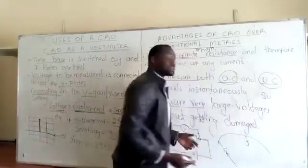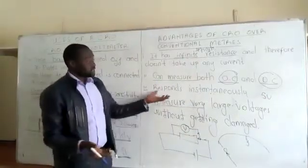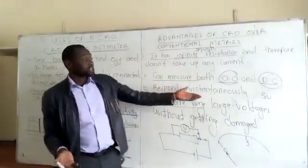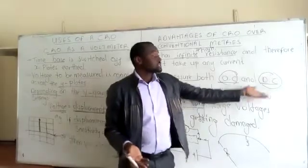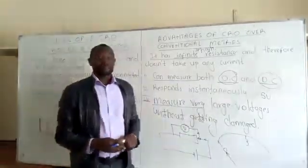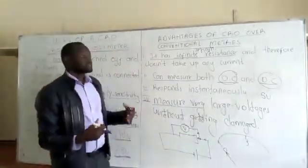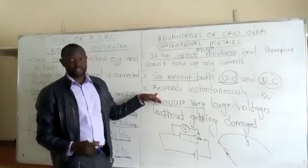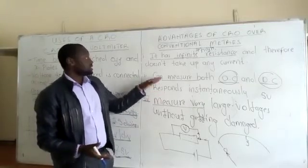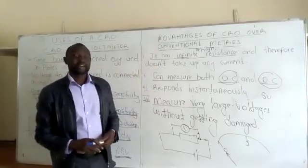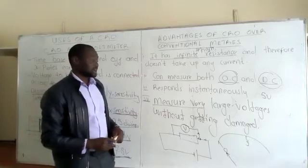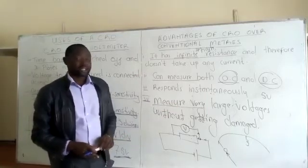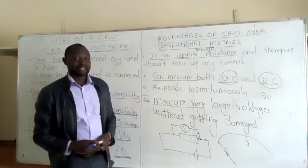We still have larger voltmeters that can measure voltages higher than five, but when you talk of measuring a voltage of 30,000 volts, then we'll need a CRO to measure very large voltages without getting damaged.